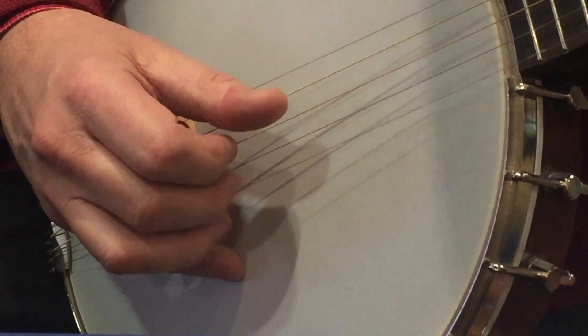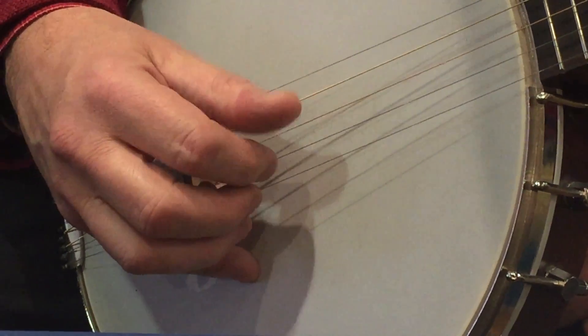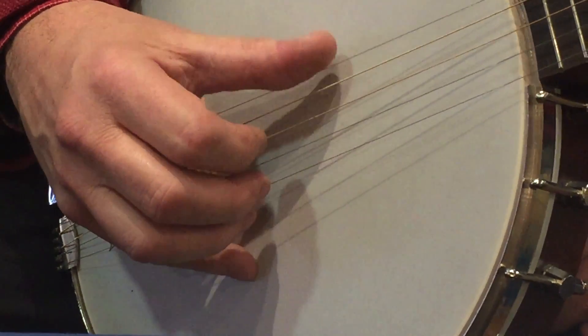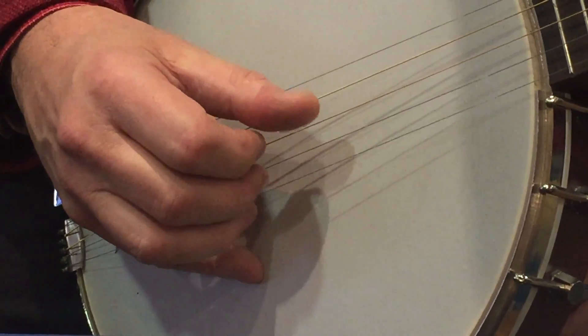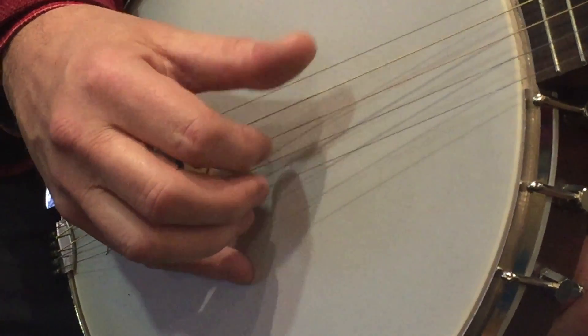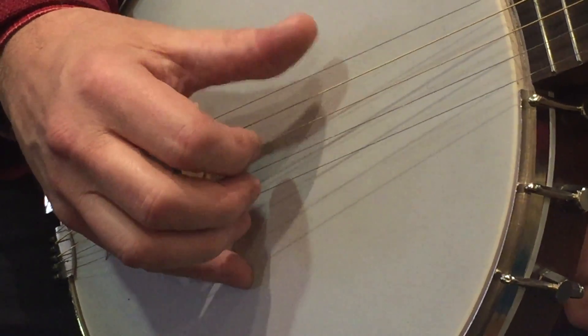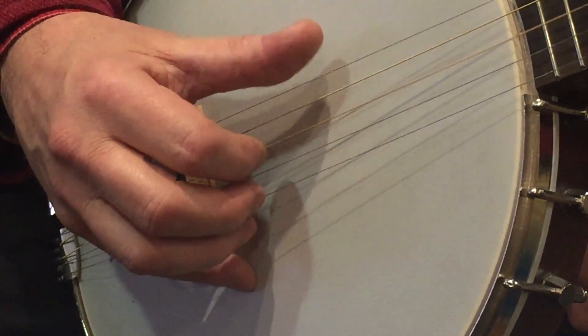And when you know that roll, you can watch television or talk to somebody or think about something else while you're doing it. It's got to be even: one and two and three and four and one and two and three and four. When you can really maybe count and do something else while you're doing it, you can move this roll.